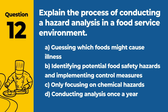Question 12. Explain the process of conducting a hazard analysis in a food service environment. The answer is B: Identifying potential food safety hazards and implementing control measures. A hazard analysis is a systematic approach to identifying and controlling food safety risks.